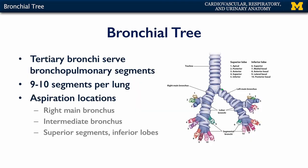Here again is the bronchial tree dividing into the primary bronchi. One important thing to notice is that the right primary bronchus is more linear and larger than the left primary bronchus, giving more of a straight shot from the trachea into the right primary bronchus. We'll discuss why that's so important with respect to aspiration of materials.